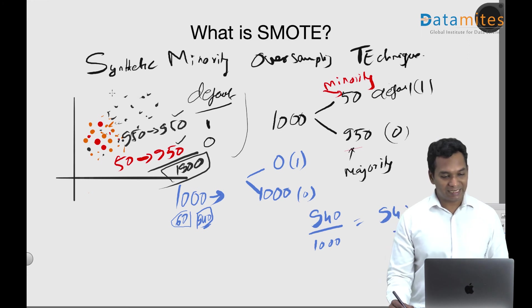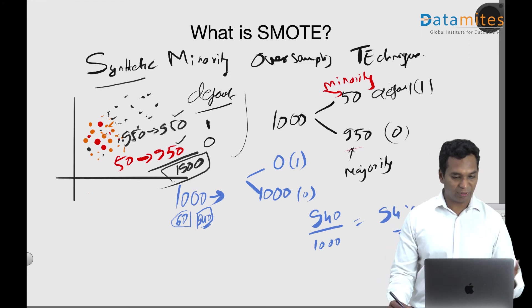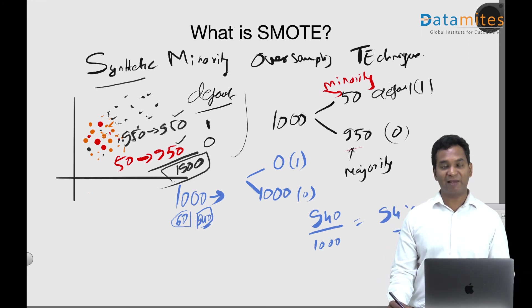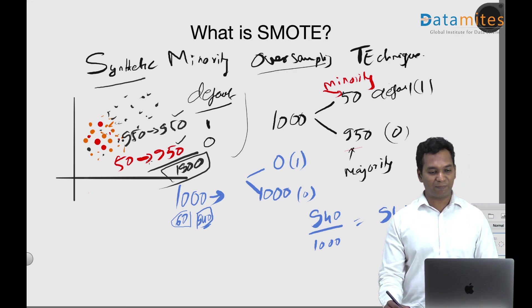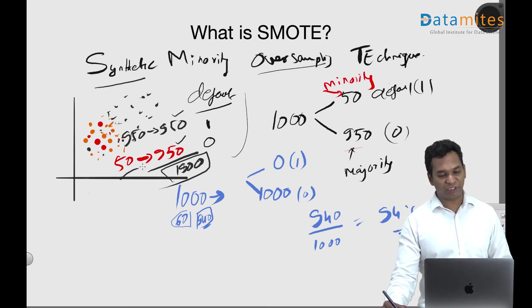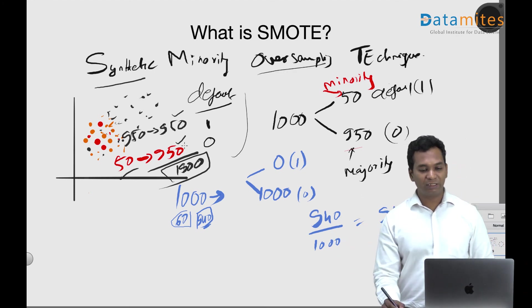We call it Synthetic Minority Oversampling Technique because we're generating fake or synthetic data from the minority class, and we're oversampling — taking those 50 records up to 950.